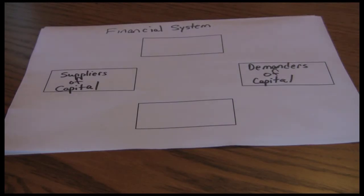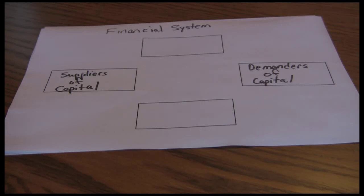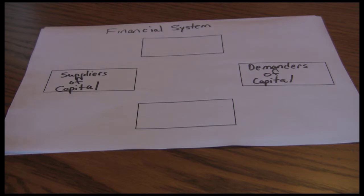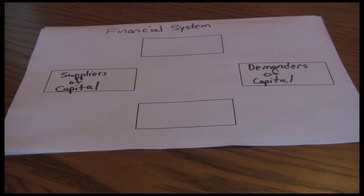There are several ways to diagram the financial system. One that I like has four primary components. The first component is the suppliers of capital — people that have excess money that they want to invest for a given time period. It can be individuals, businesses, or governments. Somebody saving for retirement, or a business with excess cash, is going to be a supplier of capital — anybody putting money into the financial system who has excess cash flows they want to spend at some later date.